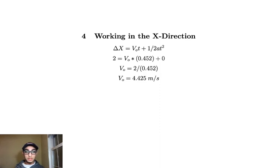And now I'm going to work in the x direction, using my displacement as 2 meters. I'm solving for my initial velocity. And I use the time that we just got from above. And this entire right expression is going to evaluate to 0 because the acceleration in the x direction is 0. So that simplifies this a lot. And I get that my initial velocity in the x direction is 4.425 meters per second.